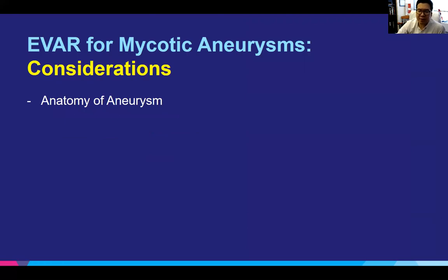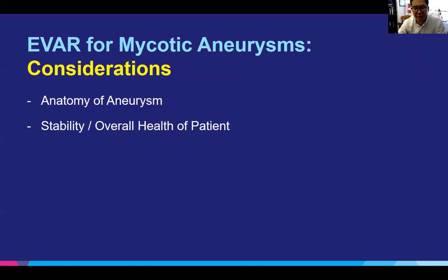When considering EVAR for mycotic aneurysms, there are a couple of key things. Number one, anatomy is important with any EVAR. We talked about how this often happens in the suprarenal, juxtarenal, or pararenal section, so it's important to know which branches are involved, as this will significantly impact your decision to treat with EVAR versus open. The overall stability of the patient is also important. A lot of times the patient comes in an unstable setting, but who is this patient when they're not this sick? Can they tolerate a bigger open procedure? If so, then your decision may be a temporizing measure rather than a definitive treatment.